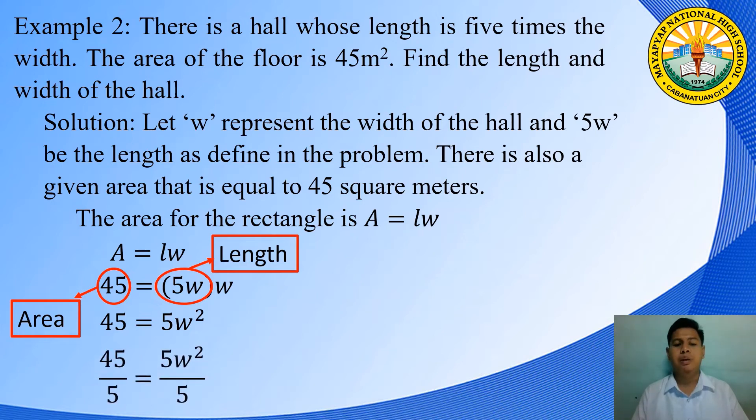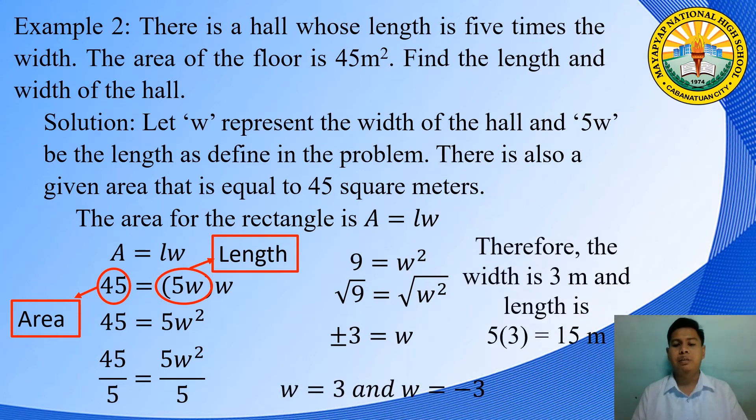Divide both sides by 5. Our equation will become 9 = W². Extracting the square root of both sides of the equation, that will become positive and negative 3 equals W. Since there is no negative measure for length, our value of W is positive 3. Therefore, the width is 3 meters and length is 5 times 3 that is equal to 15 meters.